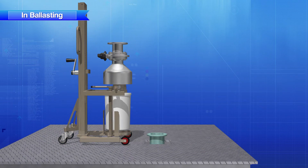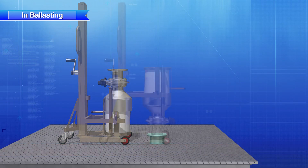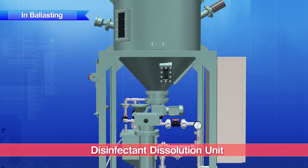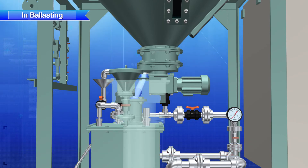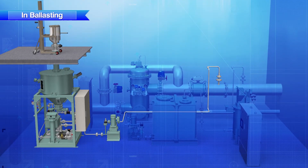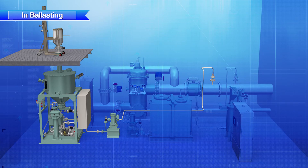Regarding the granular disinfectant: first, a container of the granular disinfectant stored on board is loaded into the disinfectant supply unit. Next, the disinfectant is fed into the hopper of the disinfectant dissolution unit. Once the ballasting operation starts, the appropriate volume of disinfectant is automatically supplied from the hopper to be dissolved. After that, the dissolved disinfectant is injected into the ballast water line by the chemical injection pump.